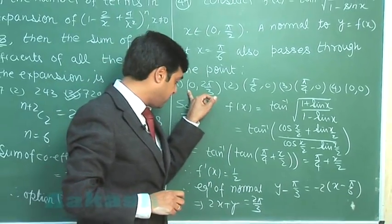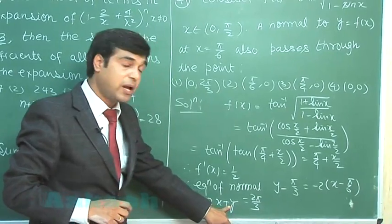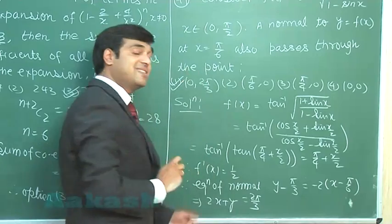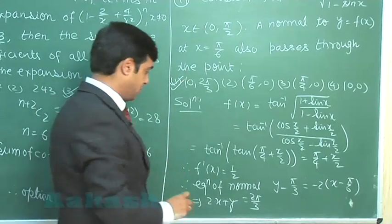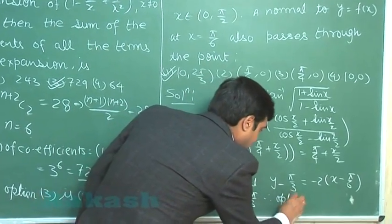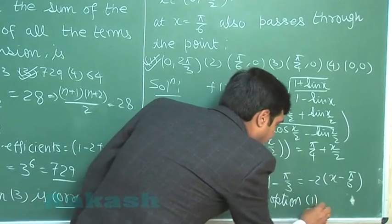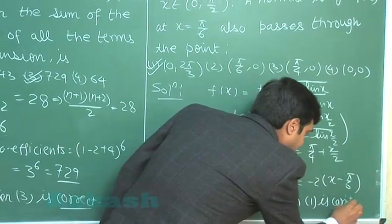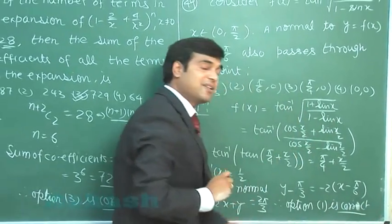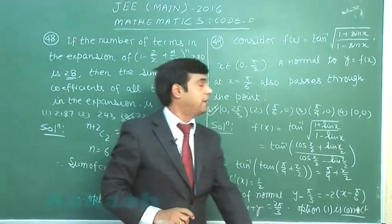From the options, putting x equals 0 and y equals 2π/3, the first option clearly satisfies this equation. Therefore option 1 is correct. Let us go for the next one.